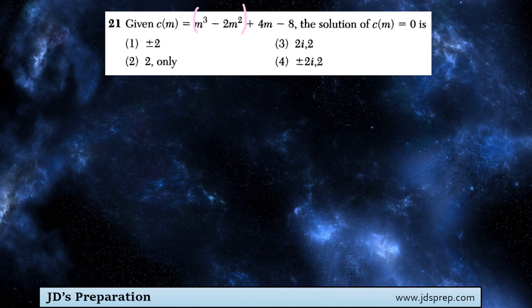So first we're going to factor m cubed minus 2m squared, and then 4m minus 8. And we're going to be taking out the greatest common factor.